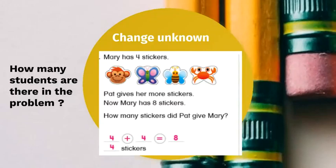We put four at the beginning, and then we're going to add, because Pat gave her more stickers — 'more' is adding. We are adding to the stickers she already has. So put four at the beginning and eight at the end, because it said now Mary has eight stickers. That sum — the answer — is eight. Now, how do we know the missing number, the unknown number?